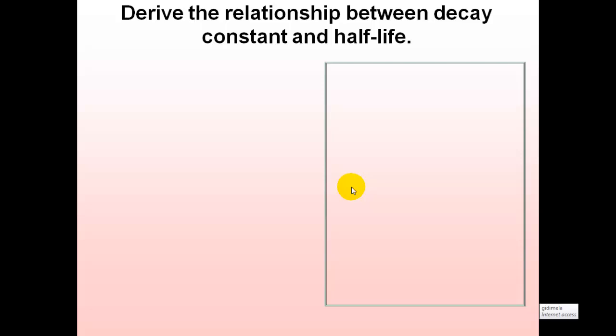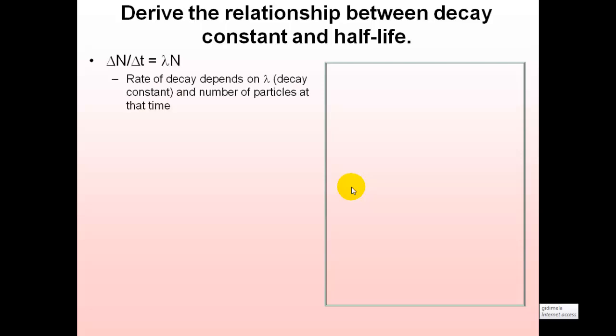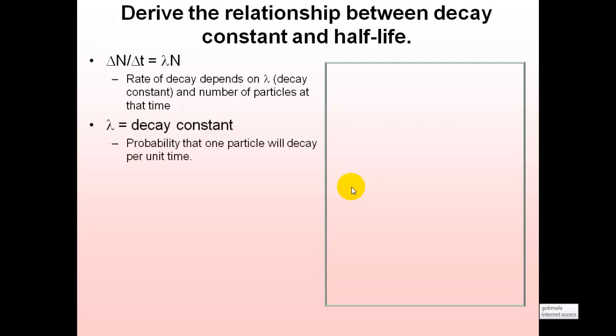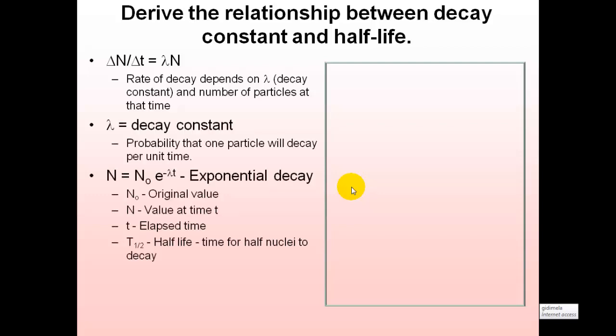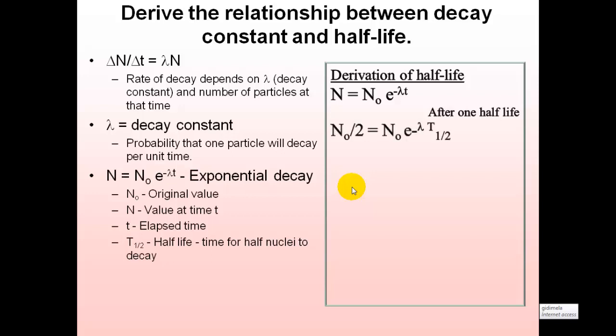Now we derive the relationship between the decay constant and half-life. We start with the exponential decay equation: N equals N naught e to the minus lambda T. After one half-life, by definition, you start with N naught and half of that will remain — in other words, N naught divided by 2. So N naught divided by 2 is equal to N naught e to the minus lambda T half.